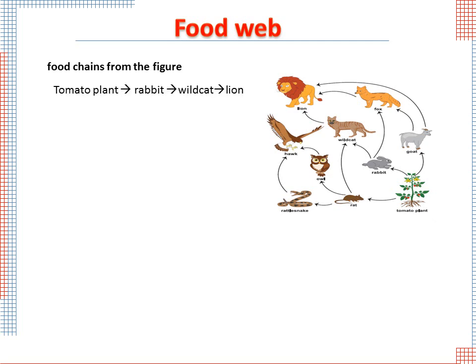For example, the tomato plant is eaten by the rabbit, the rabbit is eaten by the wild cat, and the wild cat is eaten by the lion. Another example: the tomato plant is eaten by the goat, and the goat is eaten by the lion.